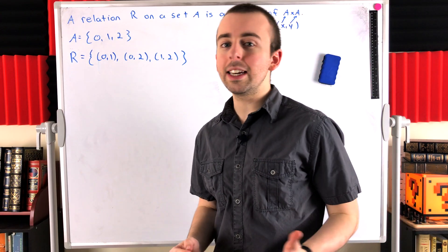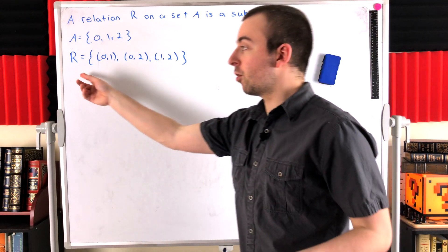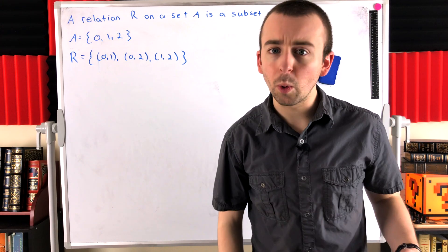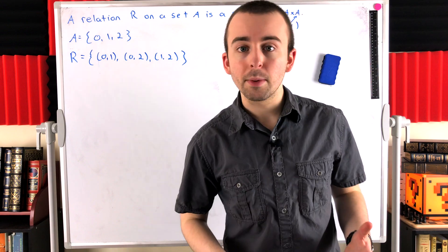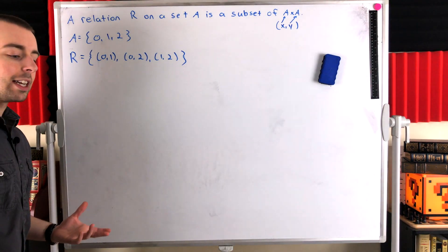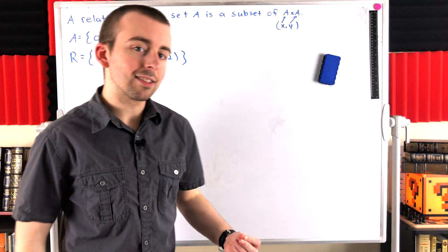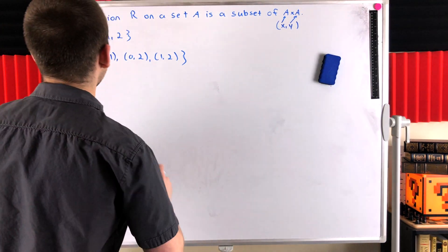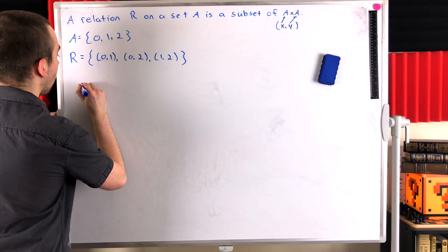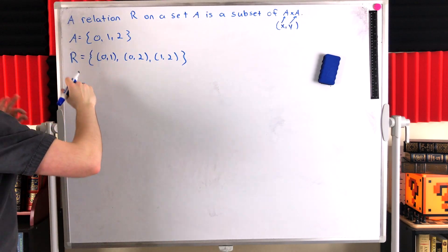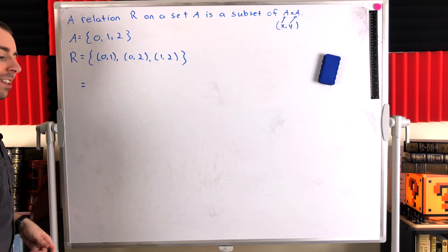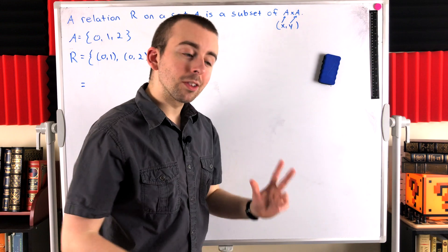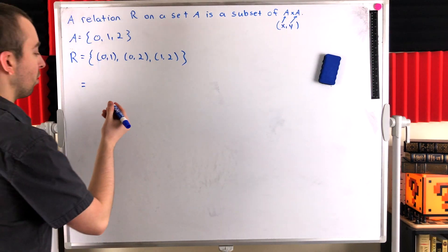Notice we don't need a special rule to have a relation — we can just spell it out explicitly by listing what elements relate to what other elements. But if you have a special type of relation in mind, it might be more convenient to define it using set builder notation. Since a relation is just a set, we can do that. Imagine A was a much bigger set with many ordered pairs in R; it might be difficult to list them all. But if we have a special type of relation in mind, set builder notation is the way to go.